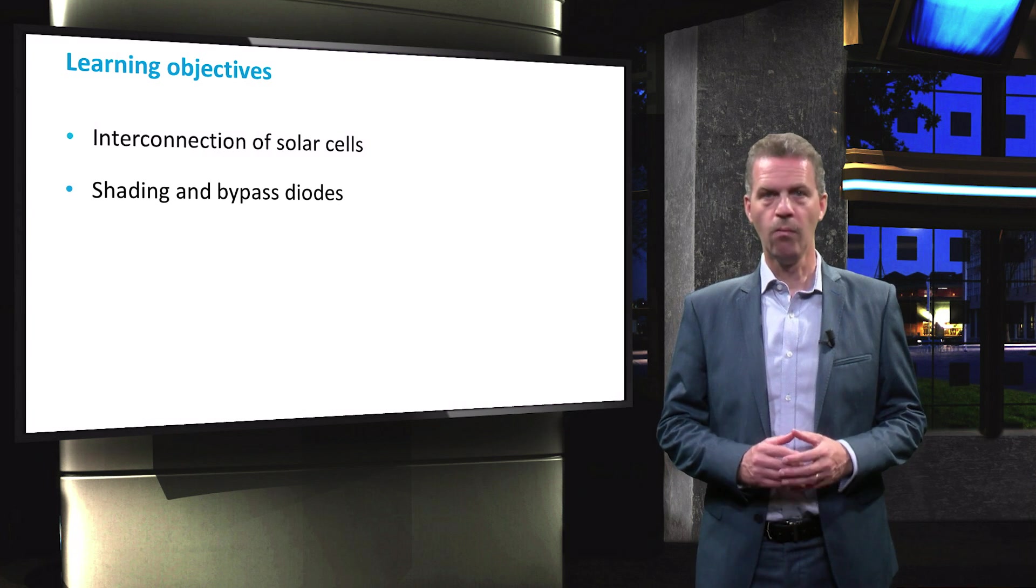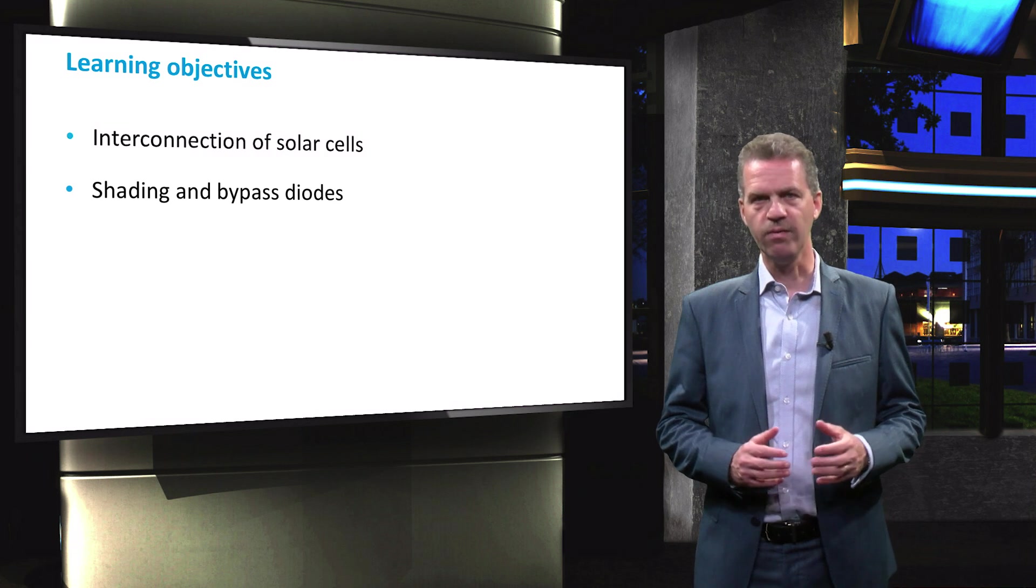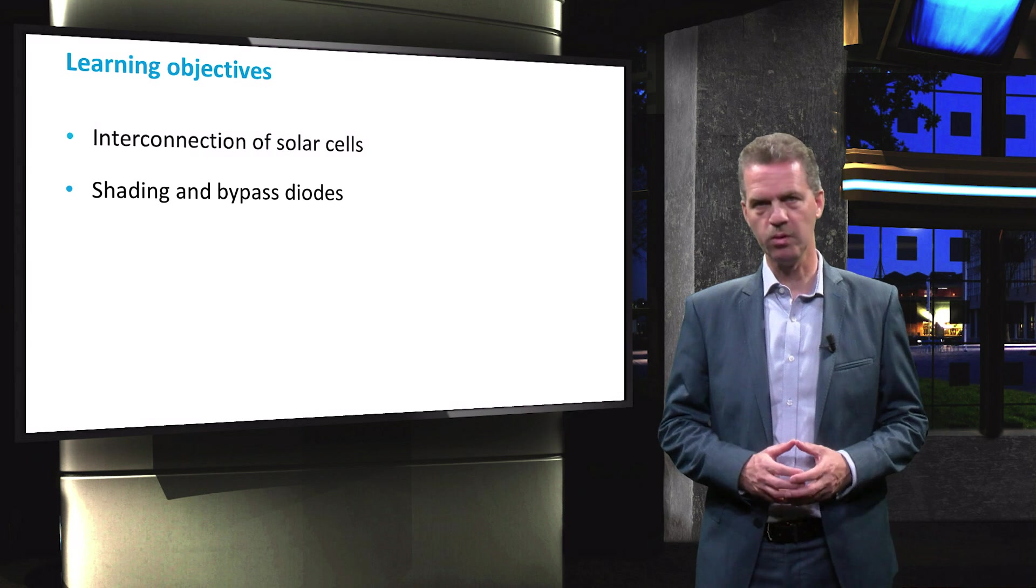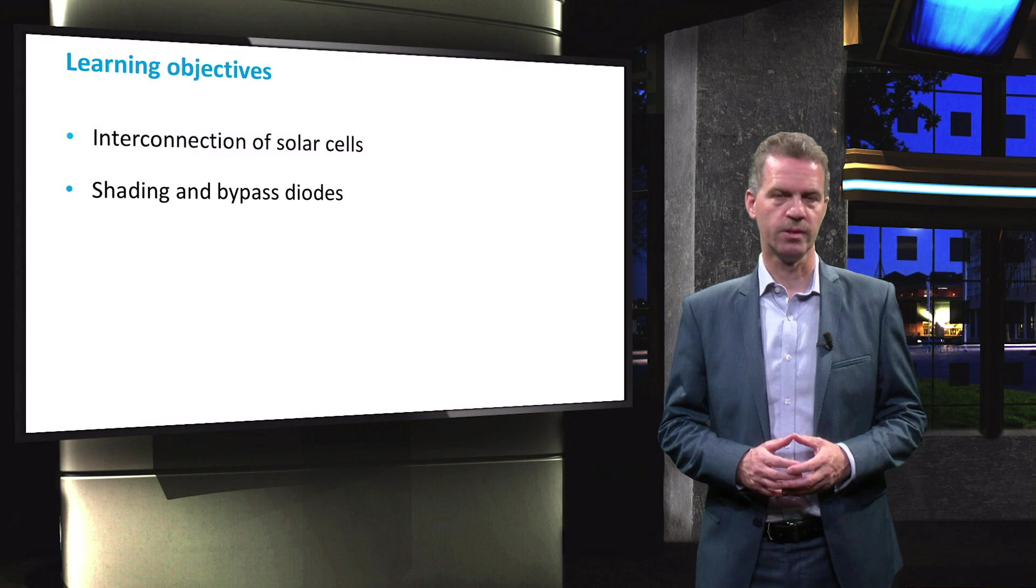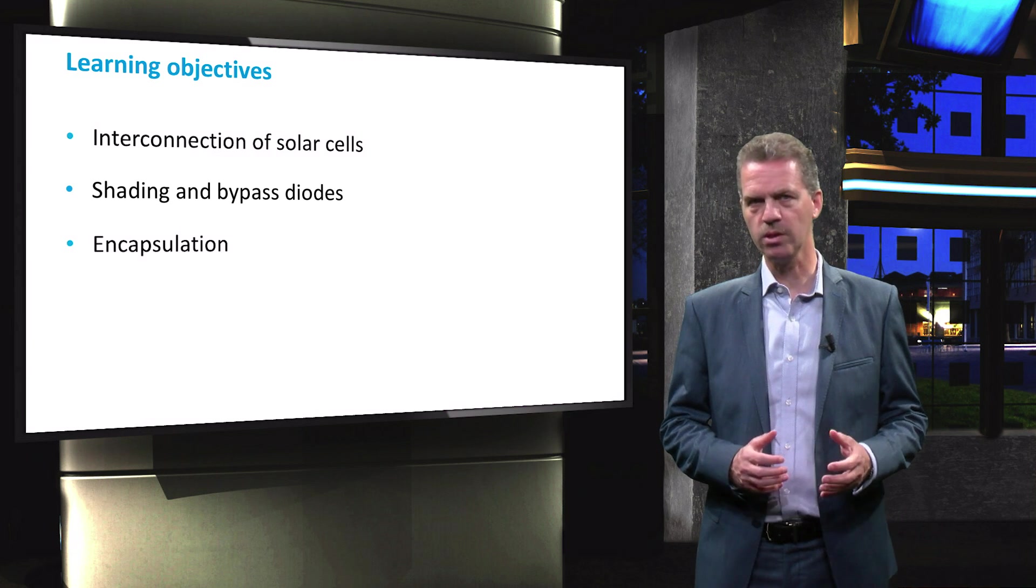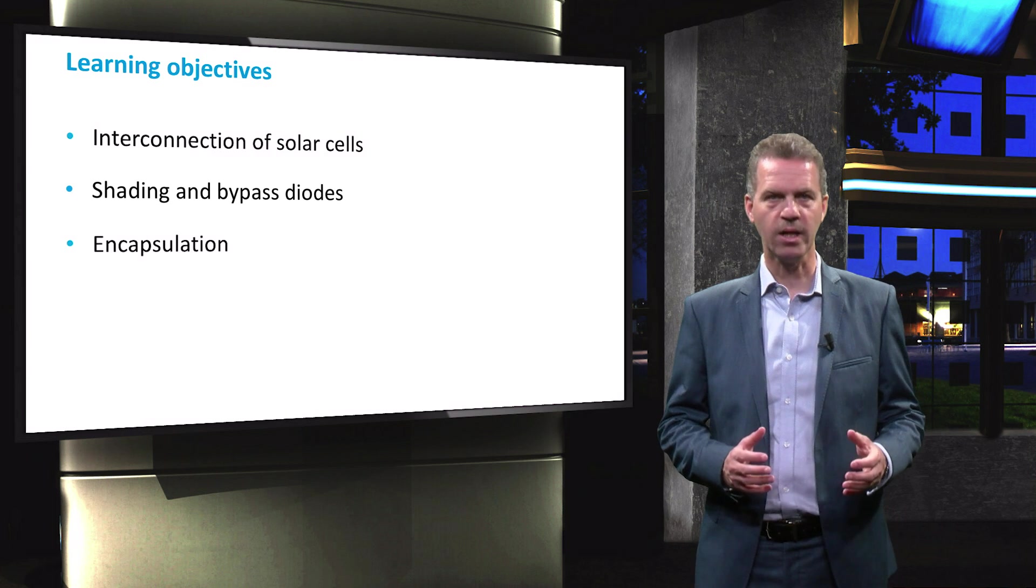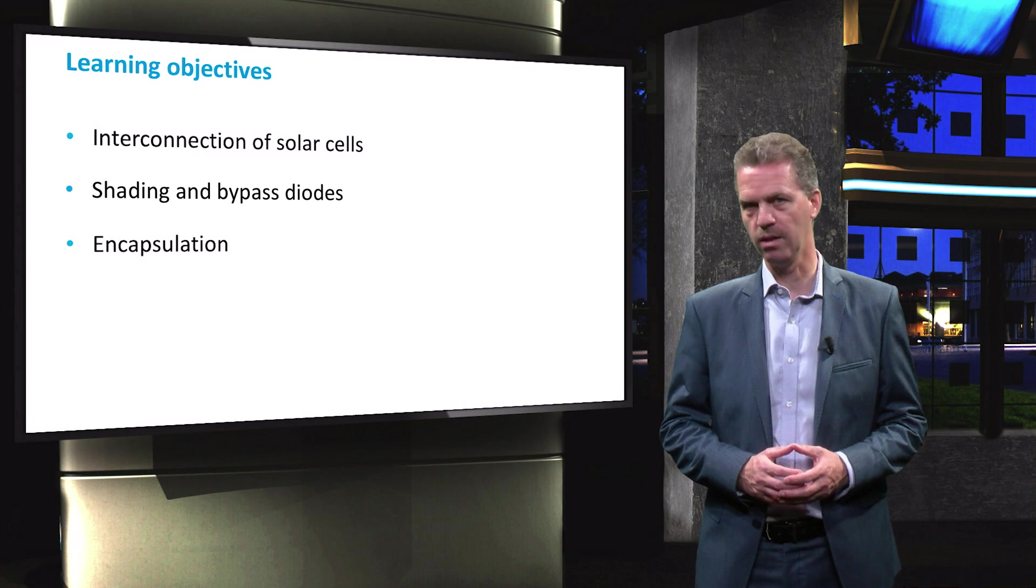Furthermore, when one or multiple cells of the modules are shaded, the IV characteristics of the module will change and problems will arise. These must be tackled by using bypass diodes. Finally, we will discuss the standard structure of a crystalline silicon solar module, where encapsulation is an important step to protect the solar modules from weather influences.